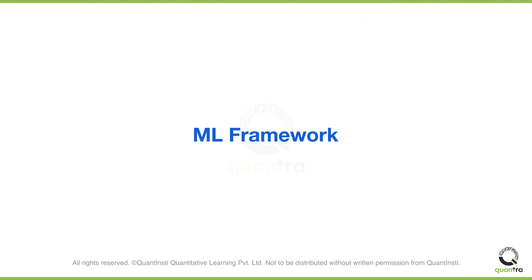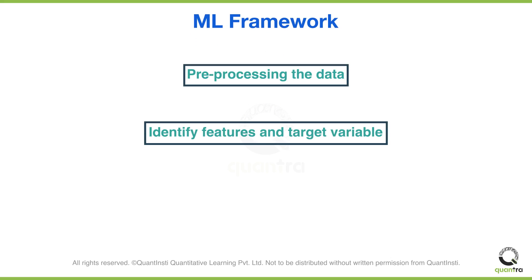Let us first define the model creation process. The model creation process consists of three main components: pre-processing the data and identifying the relevant feature set as well as the target variable for the model. This also includes the creation of additional features if required.